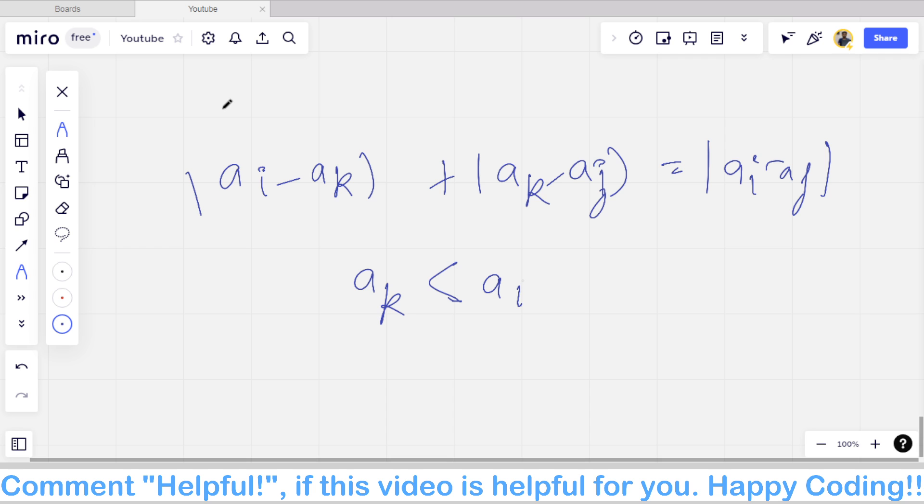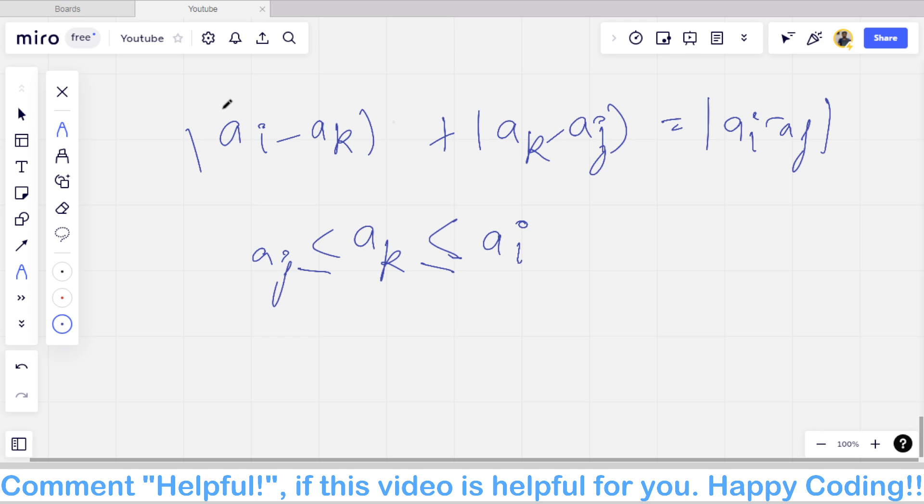should be equal to |ai - aj|. If we take ak less than ai and greater than or equal to aj, then in that case the modulus will not be considered because if ai is greater than ak, this ai minus ak becomes ai minus ak, it will always be positive.